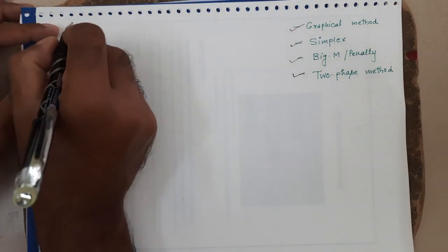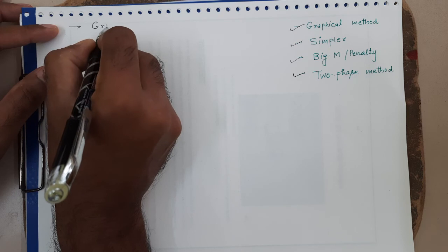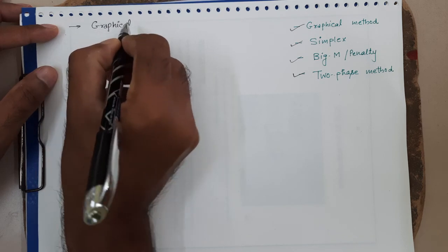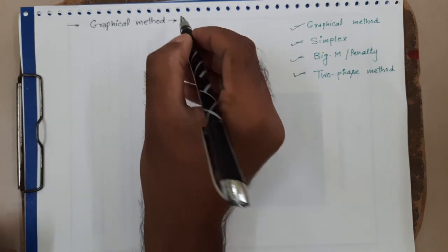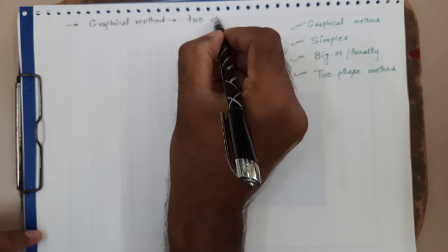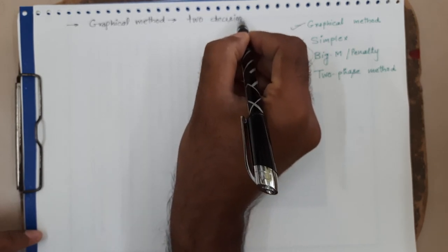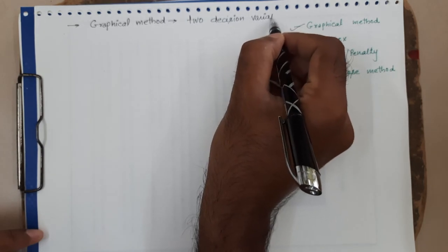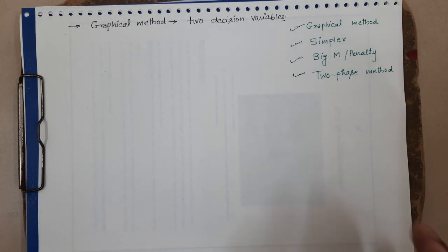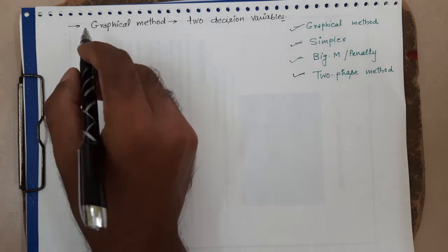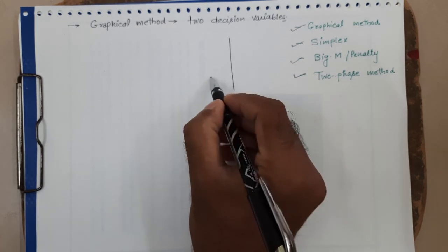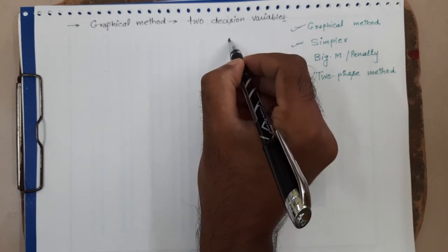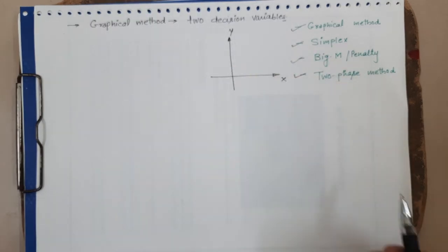This graphical method is used where we have only two decision variables in the problem. If there are more than two variables, we cannot use this graphical method, because this method is solved on paper and we have a limitation that we can draw only two axes, x and y, on a plain paper.